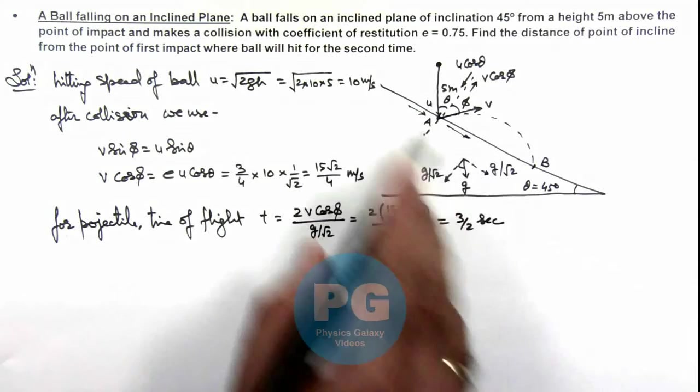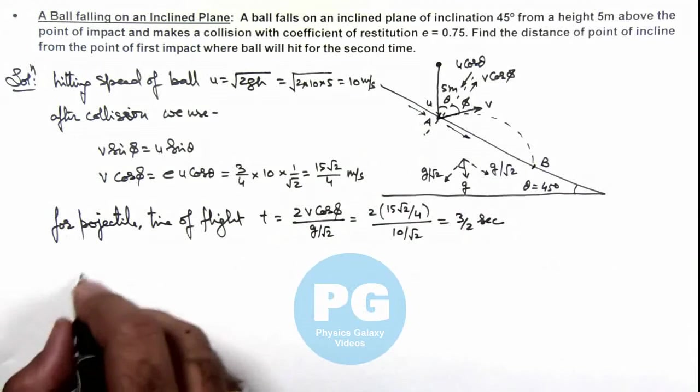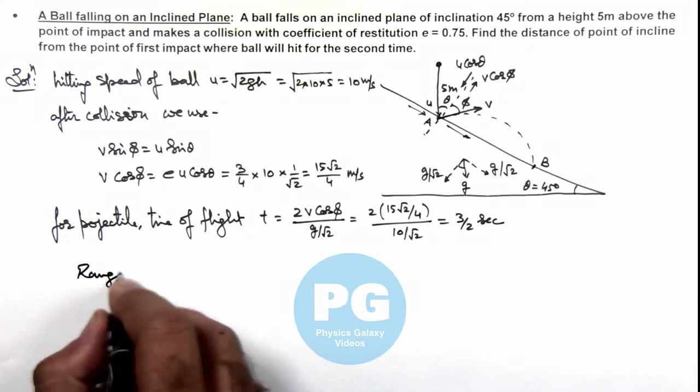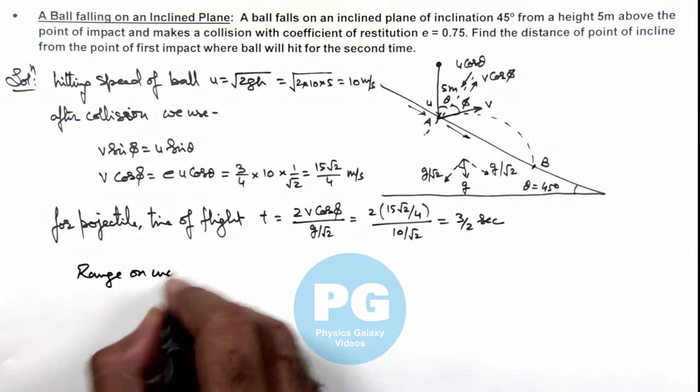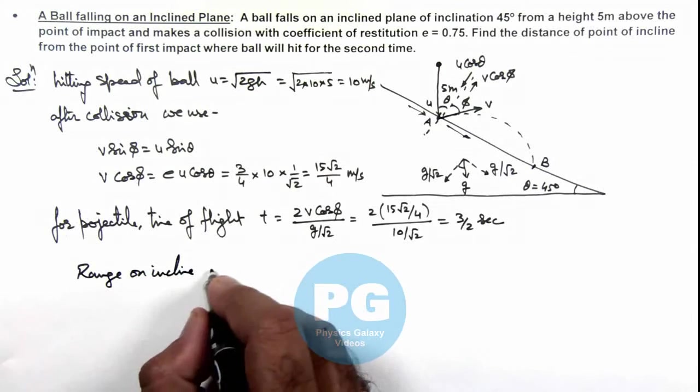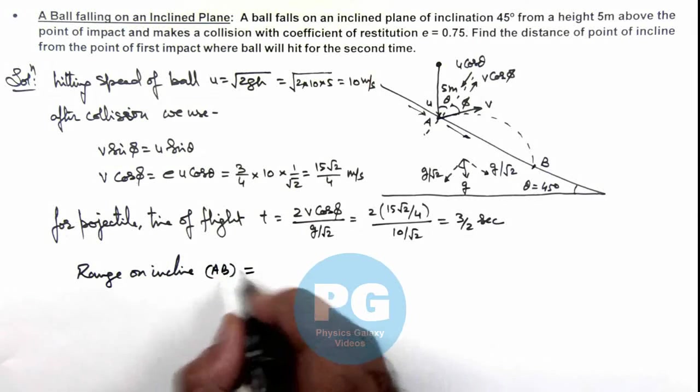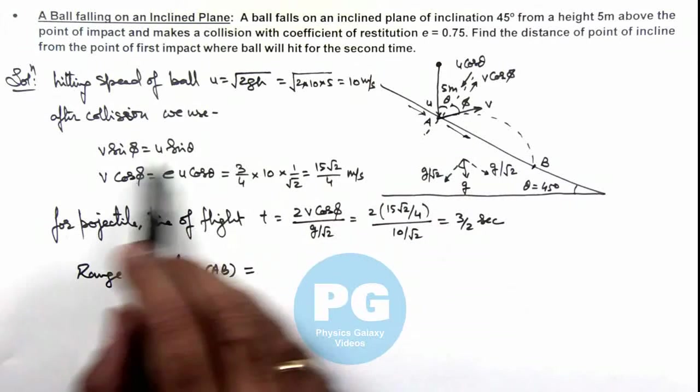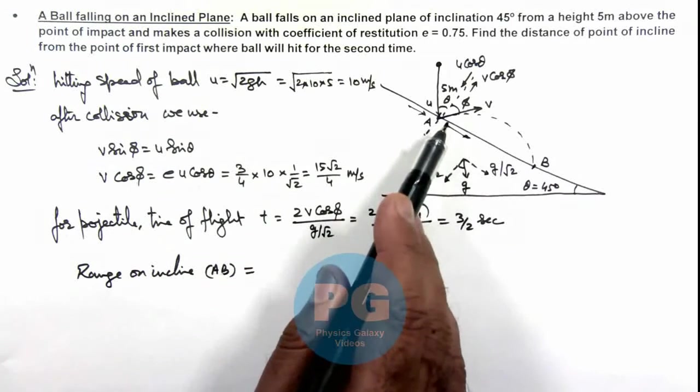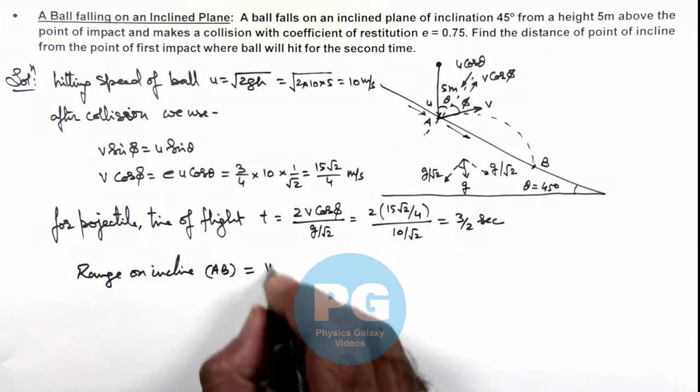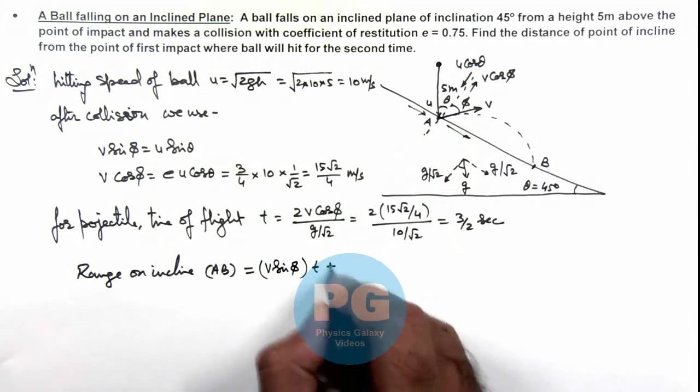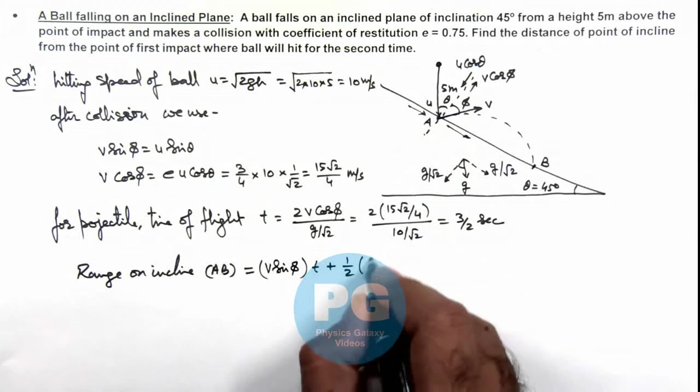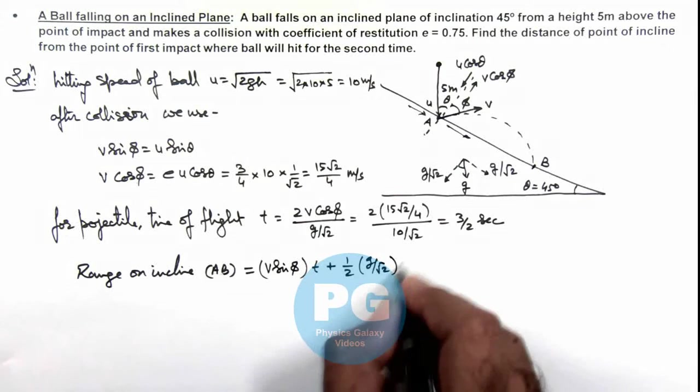We can easily find the range on incline. The range on incline, which is the distance AB, can be given as v sin φ × t + (1/2) × (g/√2) × t². The projectile starts with speed v sin φ, which equals u sin θ.